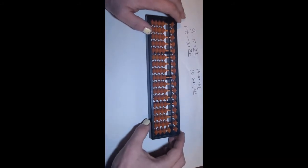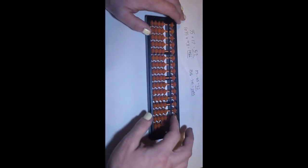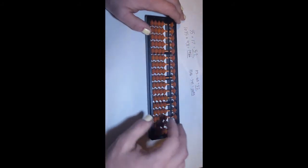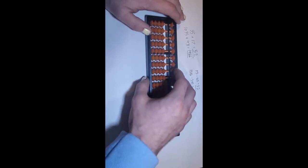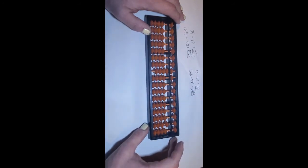Okay, so now we can do some subtraction. So first, let's do 95 minus 43. So on our abacus, we need to express 95. That can be done with writing 9 in the tens place and 5 in the ones place.